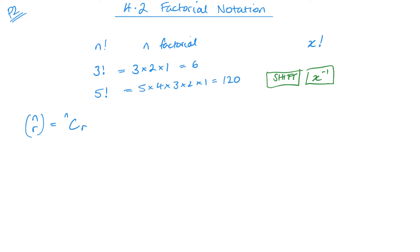I'll just give you where that button is now so that you're aware — it's basically shift and the divide sign on pretty much all Casios anyway. It looks like n, c, r like that. So that's a really useful button, one you're going to use a lot. We'll be going into a lot more detail on that next video on how we use it to expand any bracket raised to a positive power.